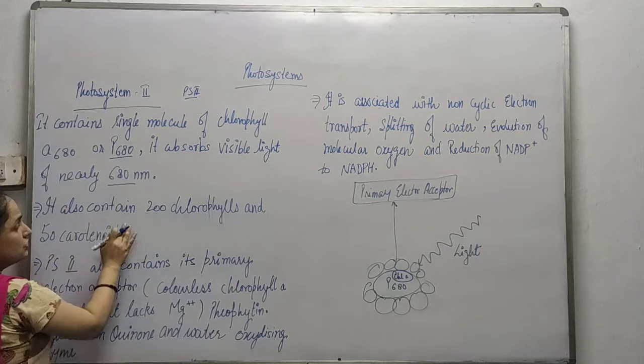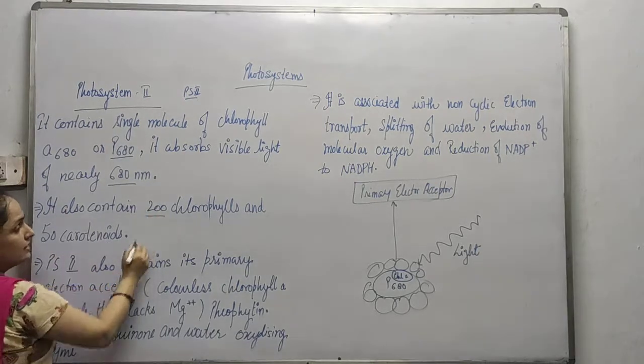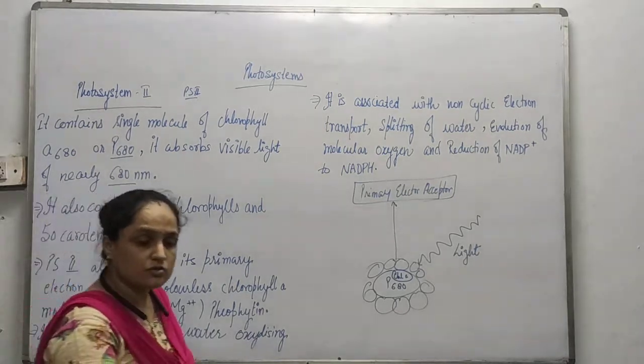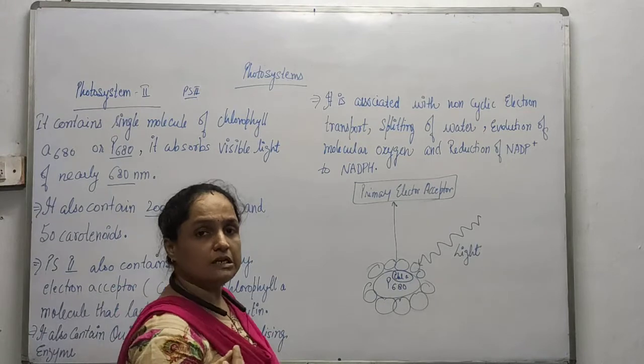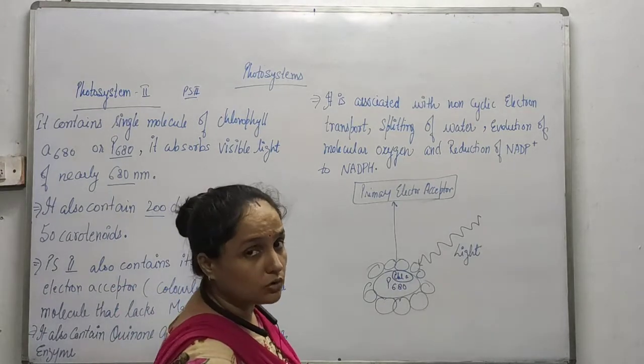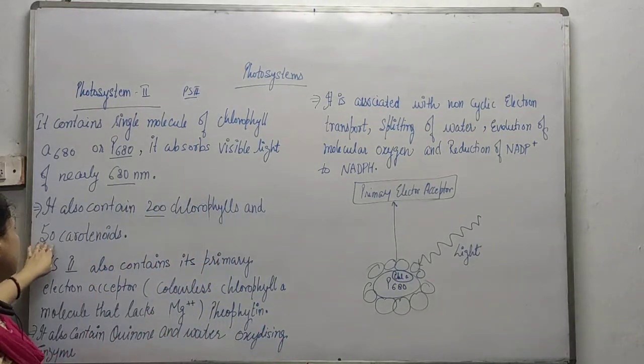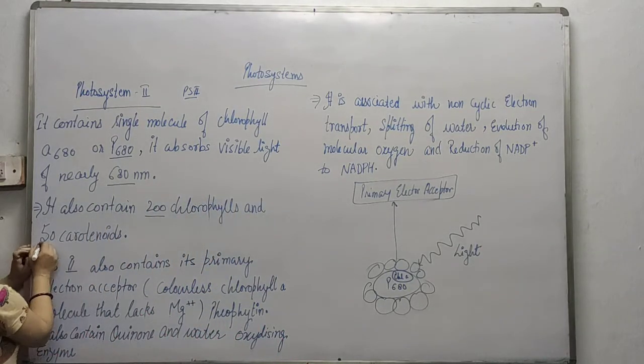Photosystem 2 also contains nearly 200 chlorophyll molecules as well as 50 carotenoids.